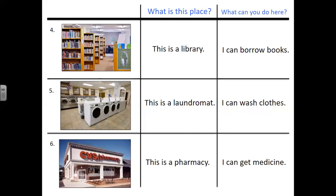Number four. What is this place? This is a library. What can you do here? I can borrow books. Number five. What is this place? This is a laundromat. What can you do here? I can wash clothes. Number six. What is this place? This is a pharmacy. What can you do here? I can get medicine.